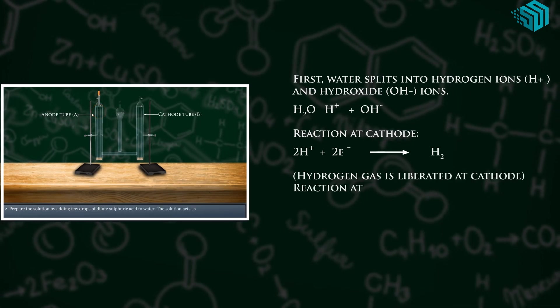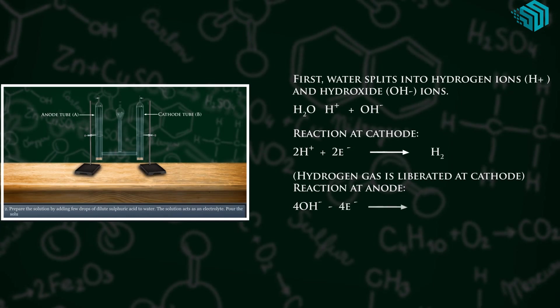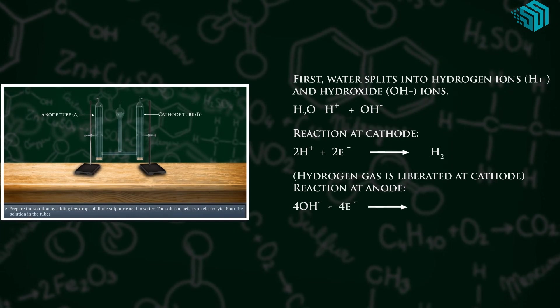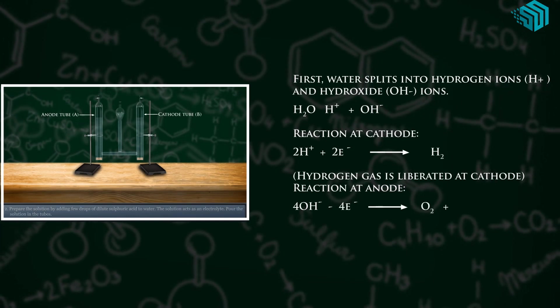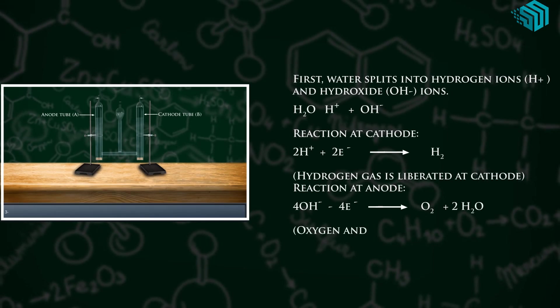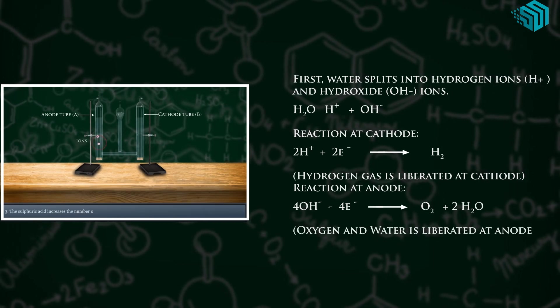Reaction at anode: 4OH minus 4 electrons gives us O2 plus 2H2O. Oxygen and water is liberated at anode.